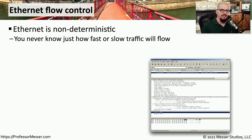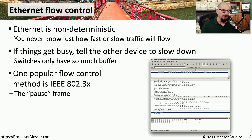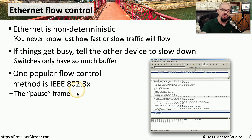One challenge with Ethernet is that it is non-deterministic — there's no way to determine how fast or slow traffic will be sent over the network. If a file transfer gets very busy and a device becomes overloaded, we need some way to tell the other device to slow down the communication for more efficient operation. Switches and other devices only have so much buffer, and it's easy to overwhelm that buffer with a very large file transfer. One way to manage this flow control is to use 802.3x, commonly called the pause frame, because it sends a message to the other device telling it to pause before sending more traffic.